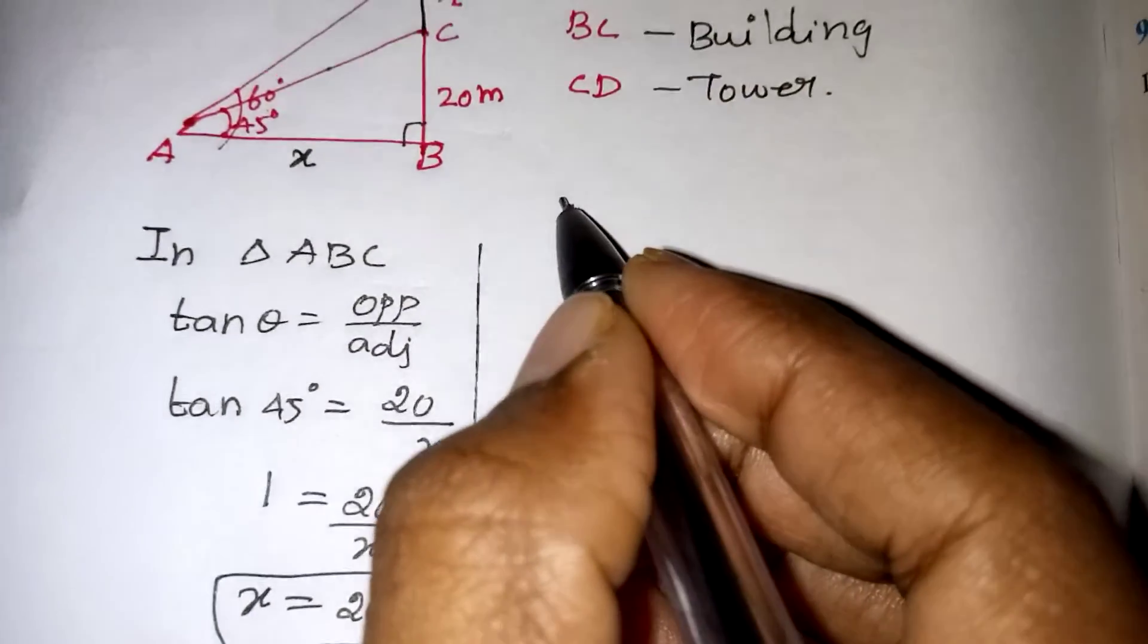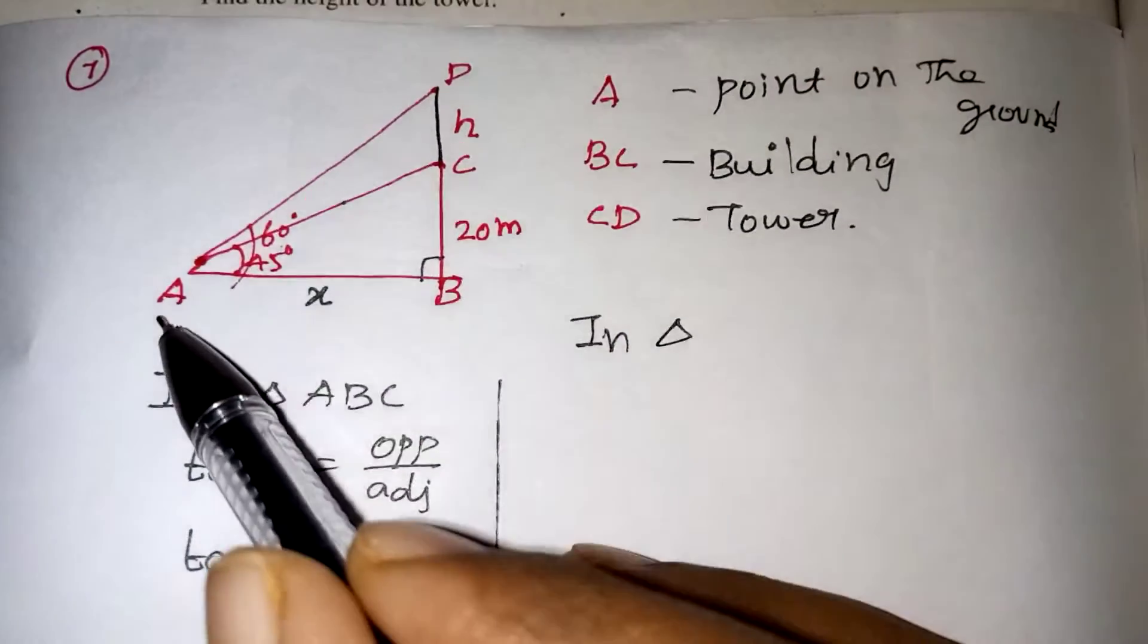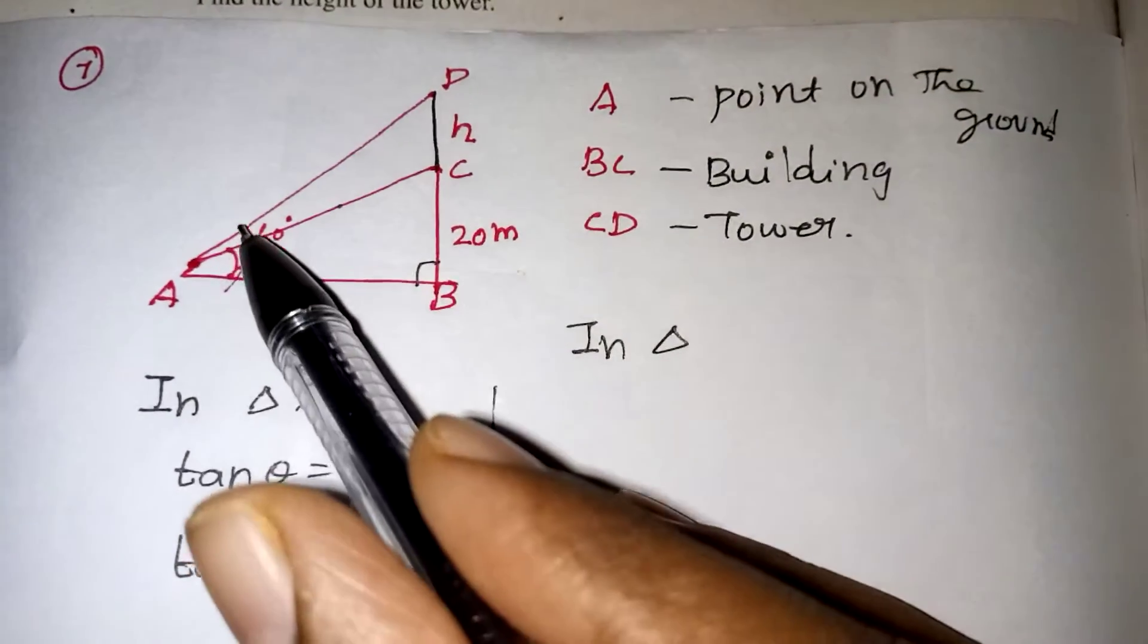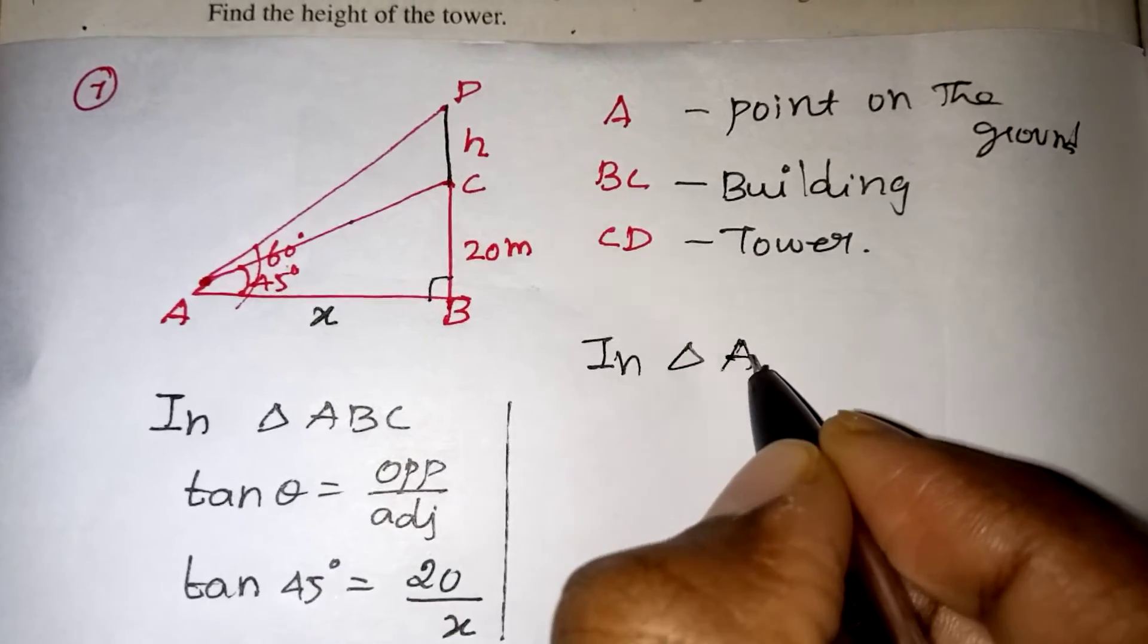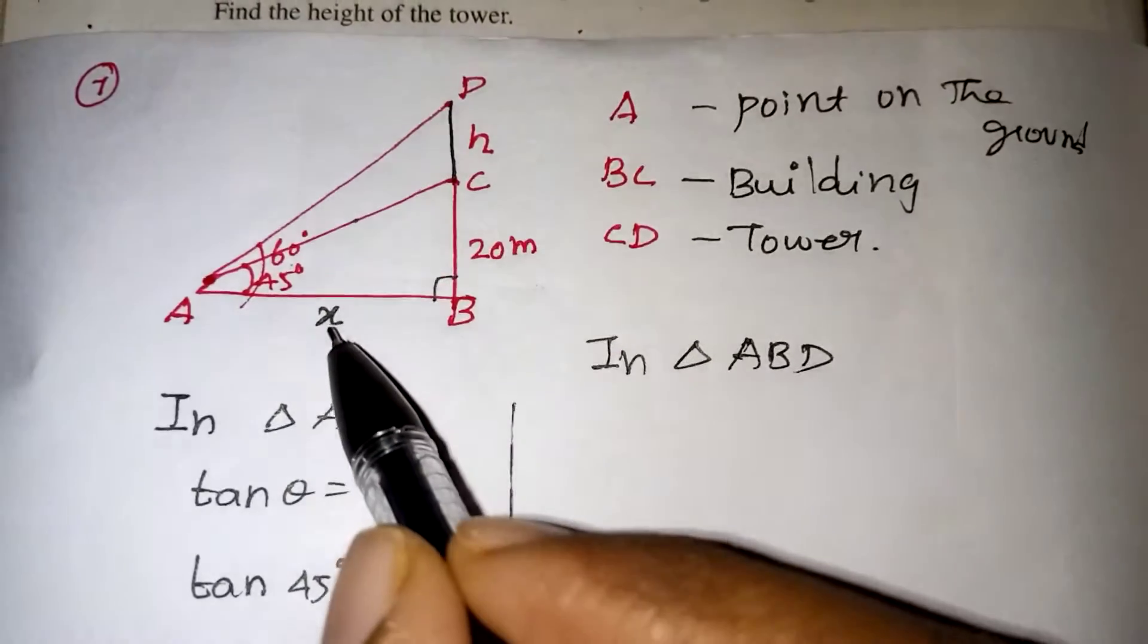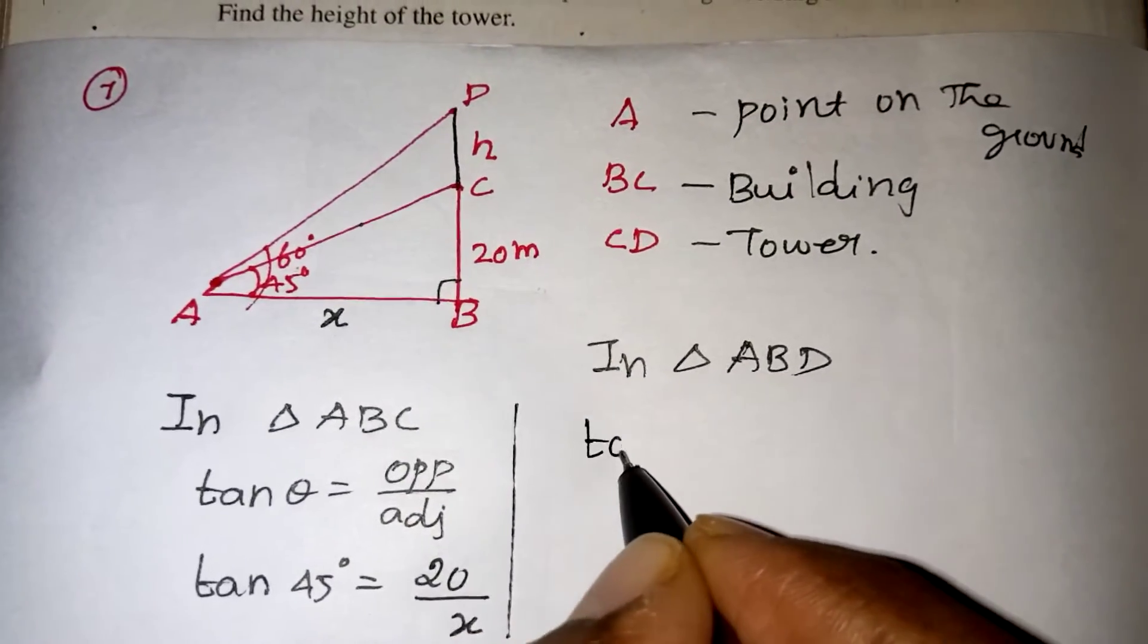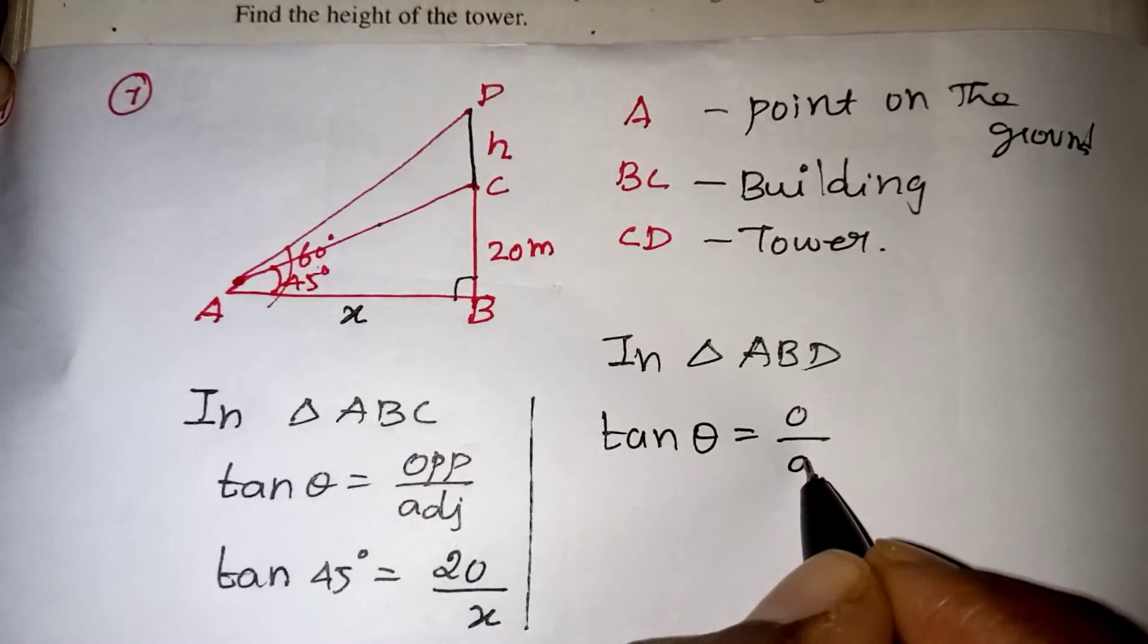Now let us consider the next triangle. In triangle, the big triangle ABD, the whole triangle we are taking now, the angle will become 60 degree. In triangle ABD, again adjacent side and opposite side only our question. So we have to take the tan theta, again opposite side by adjacent side.